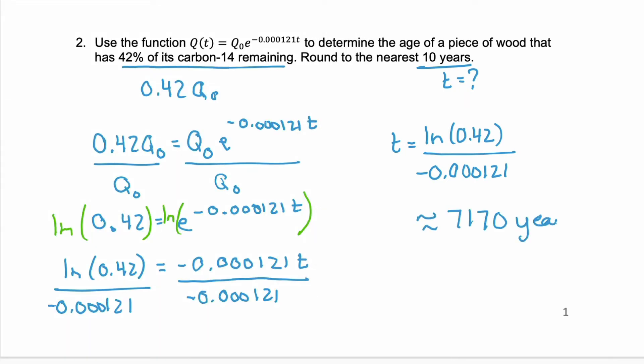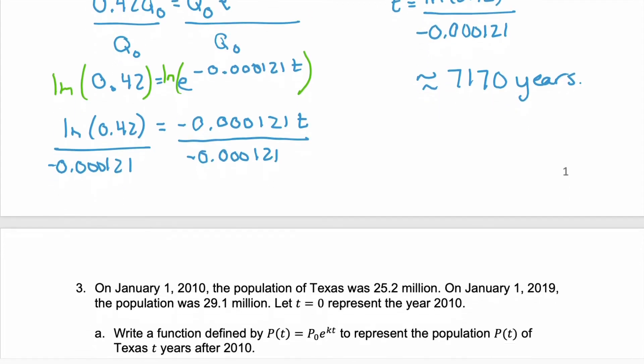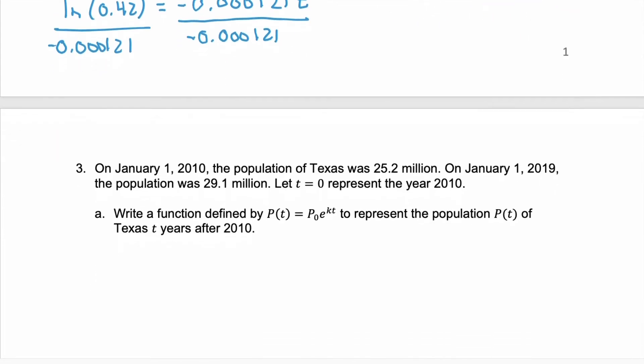So we just learned that it would take 7,170 years for a piece of wood to only have 42% of its initial carbon-14 remaining. Let's look at a couple more examples.